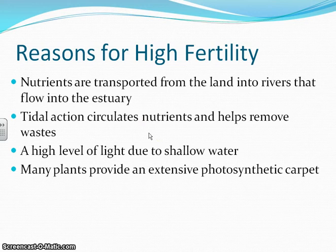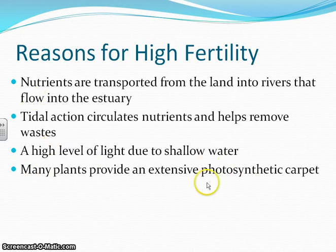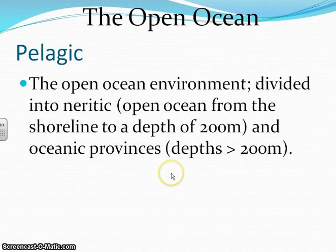Why is the estuary so fertile? Because there's so much nutrition being transported from the watershed and the river's watershed. Also, the tides help circulate the nutrients, so we're not depending on something like the fall and spring turnover. There's shallow water, so there's lots of light, and there are lots of plants because of that shallow water — they can reach the sun while their roots can reach the benthic surface at the same time. So we have lots and lots of producers to support this environment.